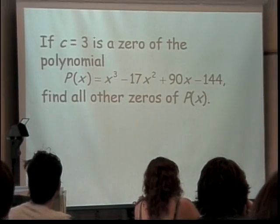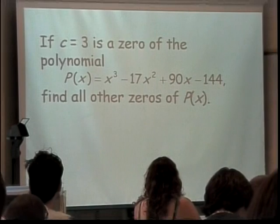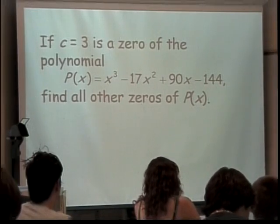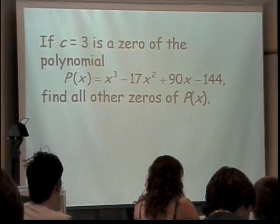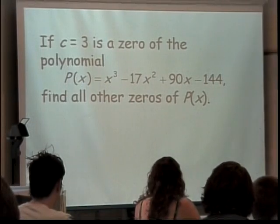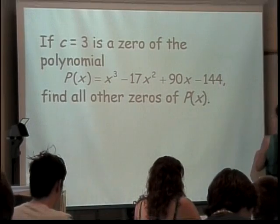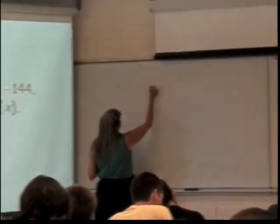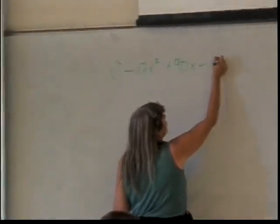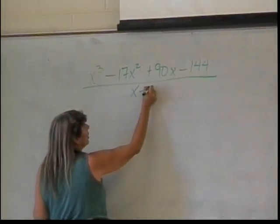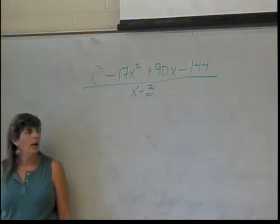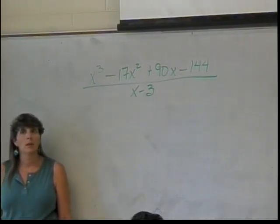Here's our first example. If c equals 3 is a zero of a polynomial, find all the other zeros. Well, how is the factor theorem going to help us here? What does the factor theorem say I could do? Yeah, so I could basically divide this by x minus c. So, I could take my x cubed minus 17x squared plus 90x minus 144 and divide it by x minus c. Or, in this case, that would be 3. Positive 3, yes. x minus 3. And what should my remainder be? 0. It should be 0.